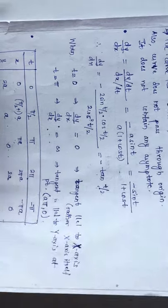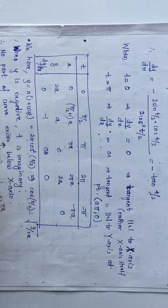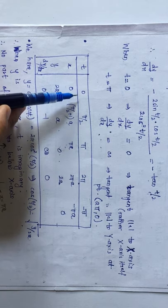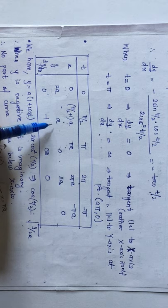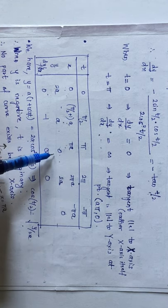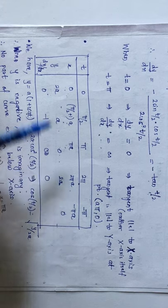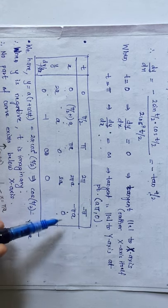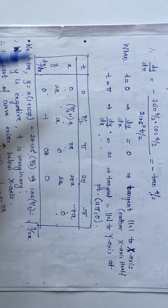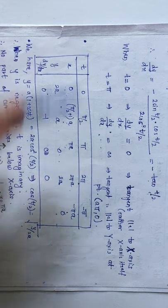Now we draw a table to see how x and y vary, which will help trace the curve easily. At t = 0: x = 0, y = 2a. At t = π/2: x = a(π/2 + 1), y = a. At t = π: x = πa, y = 0. At t = 2π: x = 2πa, y = 2a. For negative t, at t = −π: x = −πa, y = 0.